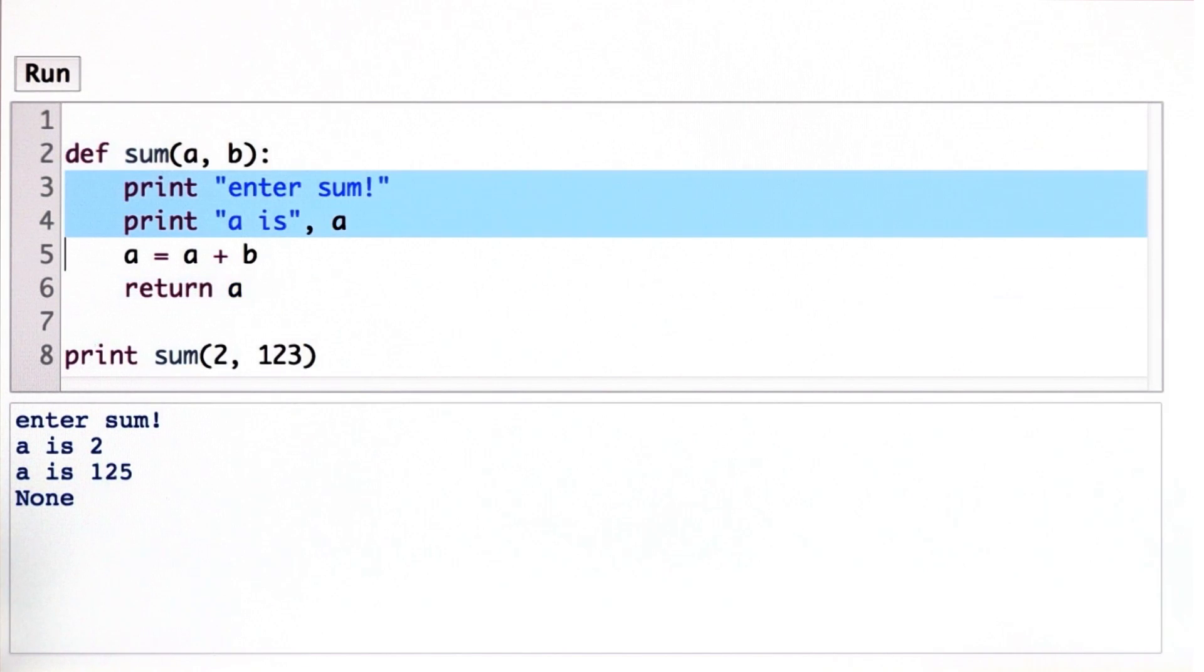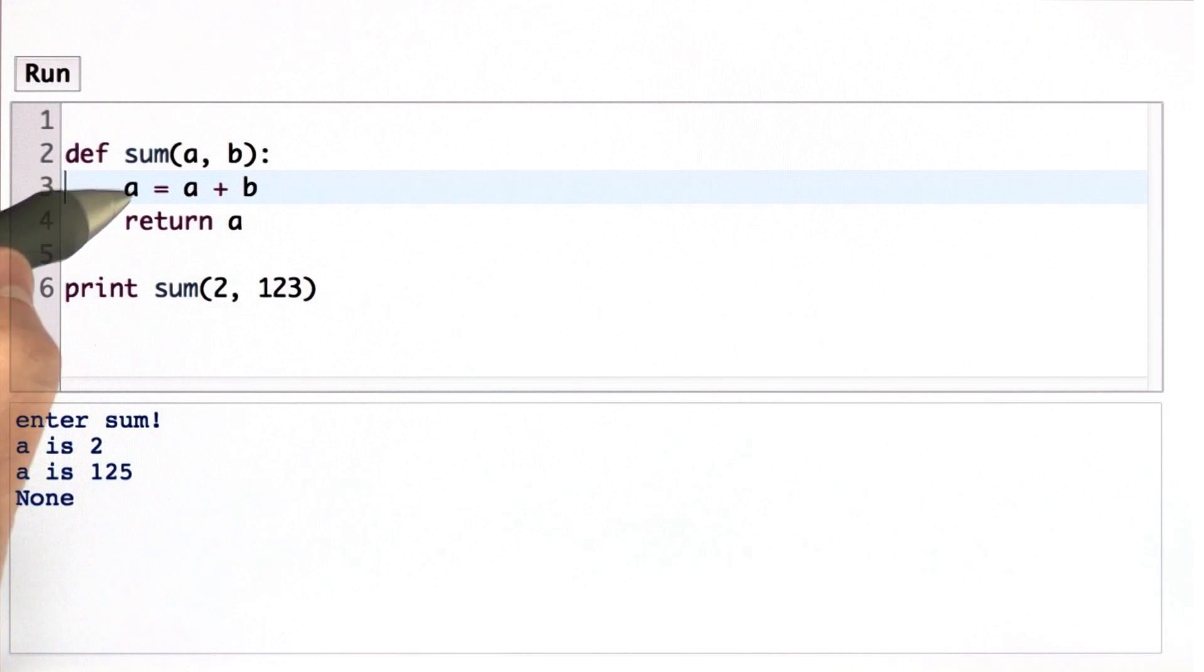So if we add a return statement to sum, now we have the original code that we had. I've removed the print statements, so we don't need to see those again. We have this, and now we've added a return statement. Now when we run this, we do get the value 125.